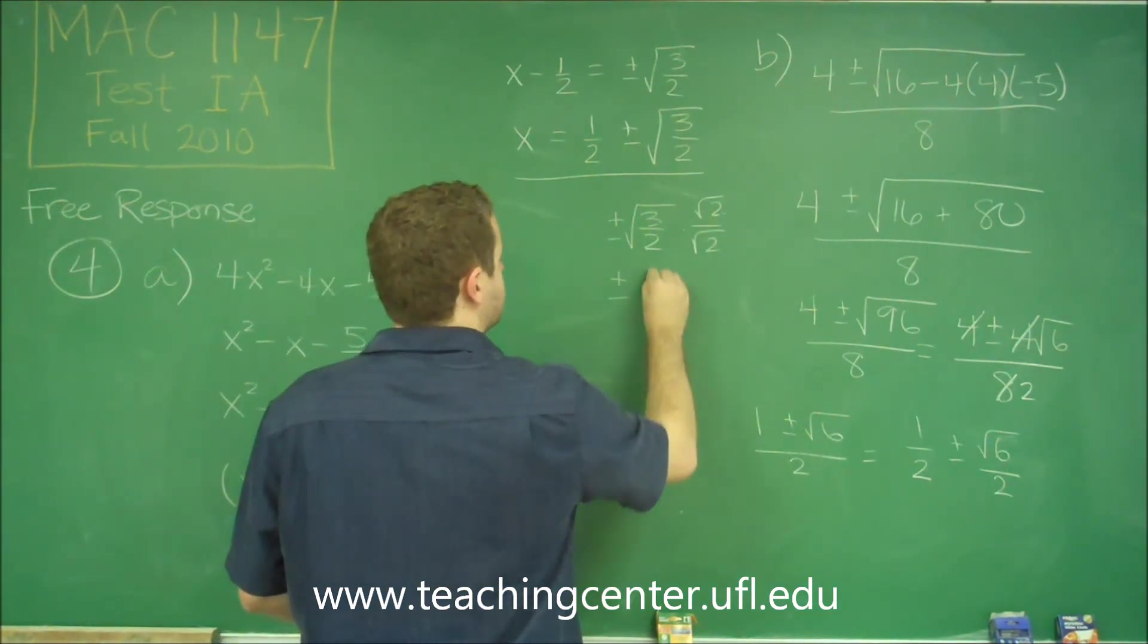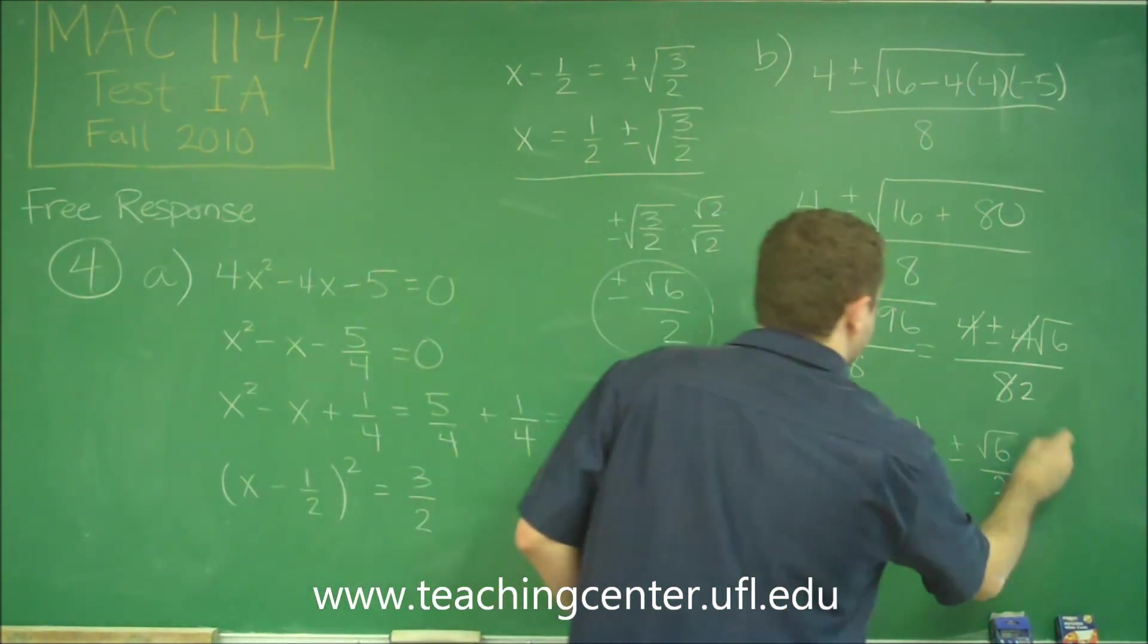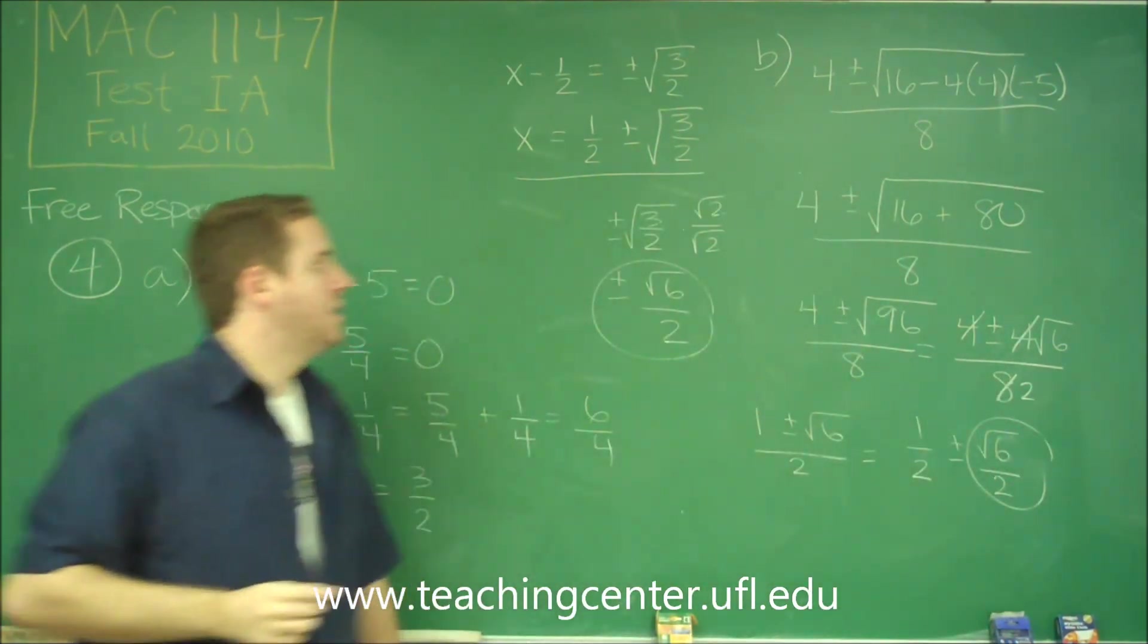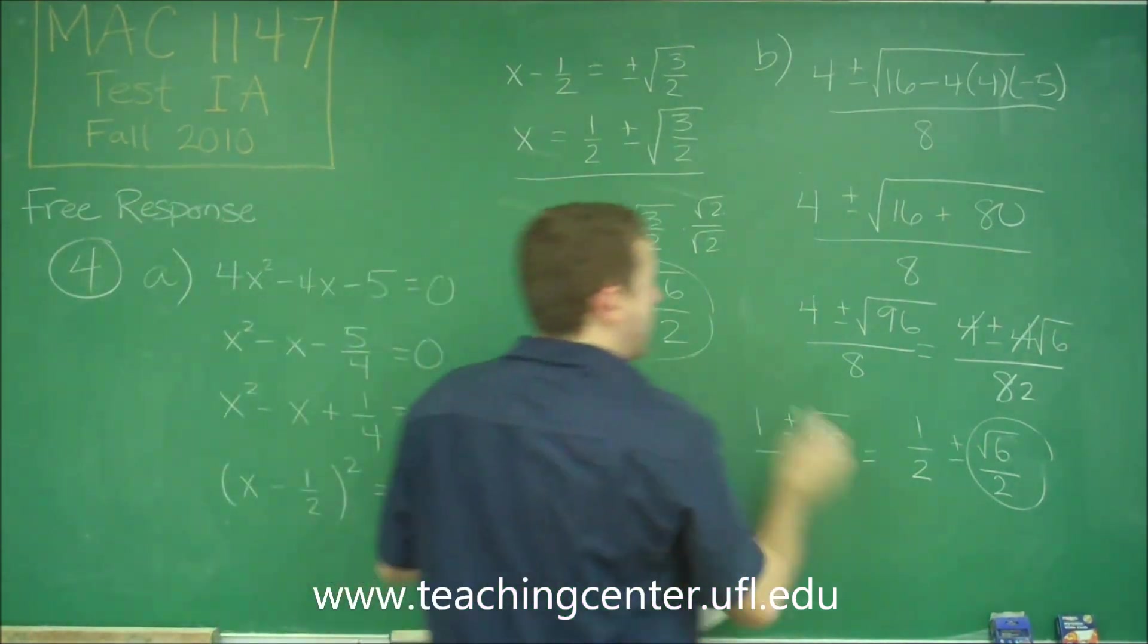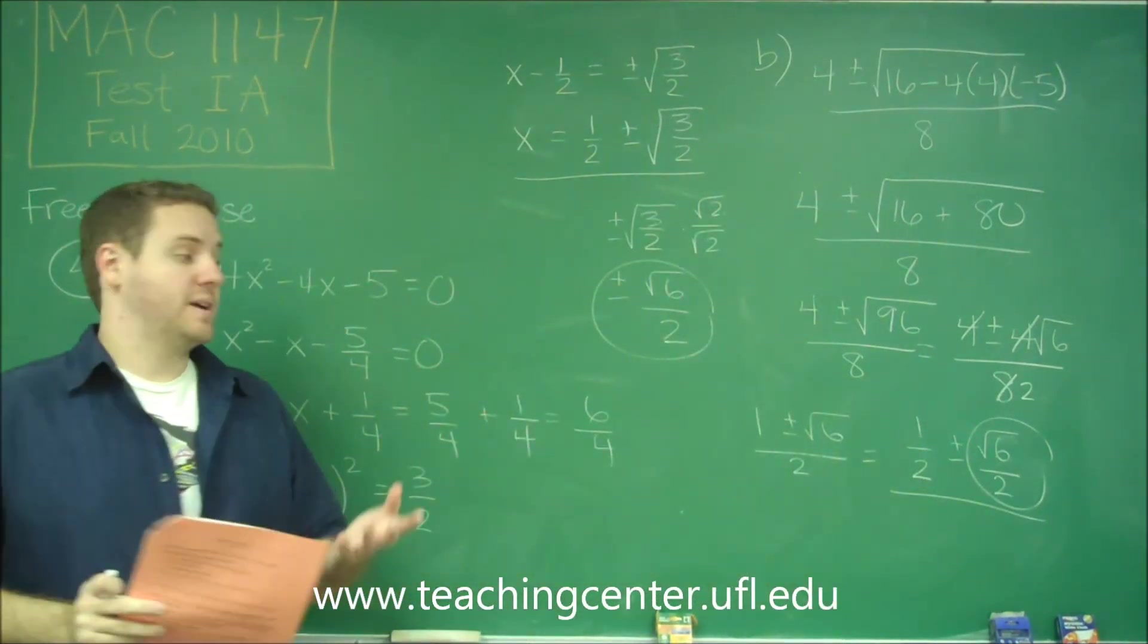So here, √3 × √2 is √6. On the bottom, we have 2. So this and this match. And either way you want to write it, either this way or this way here, is going to be your correct answer there.